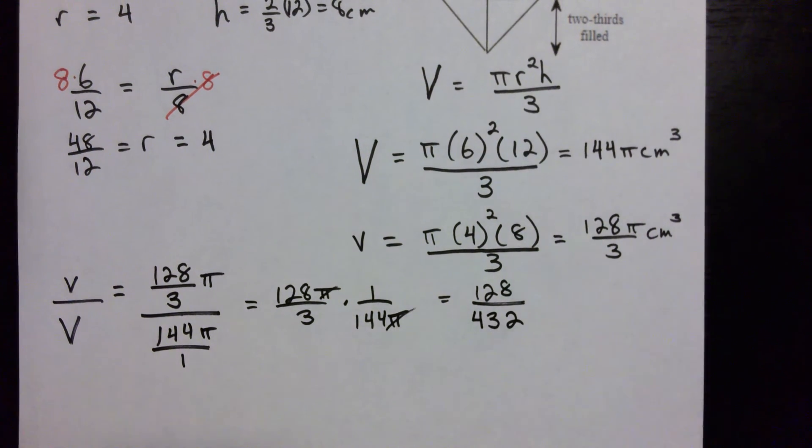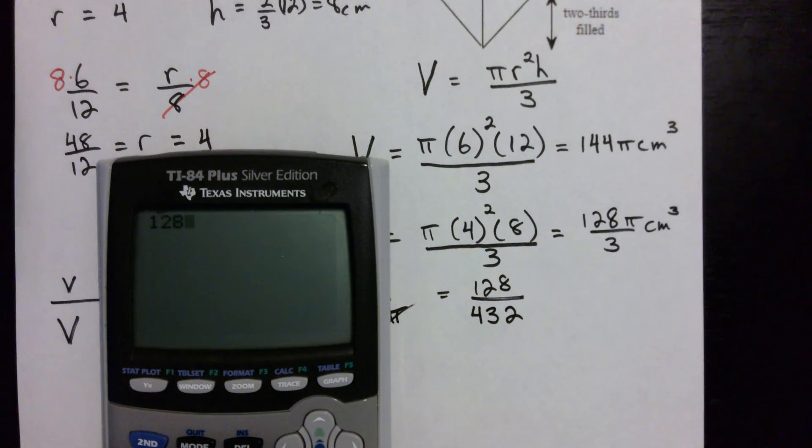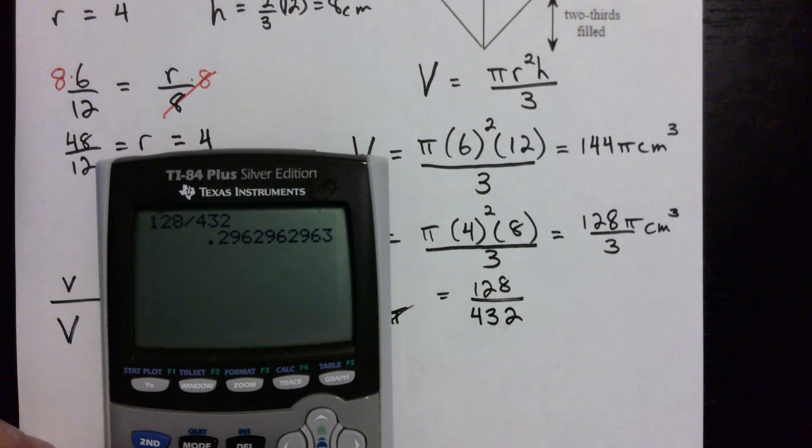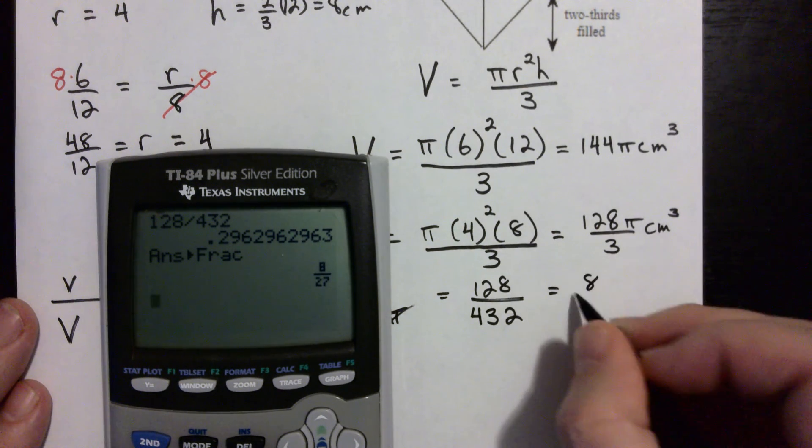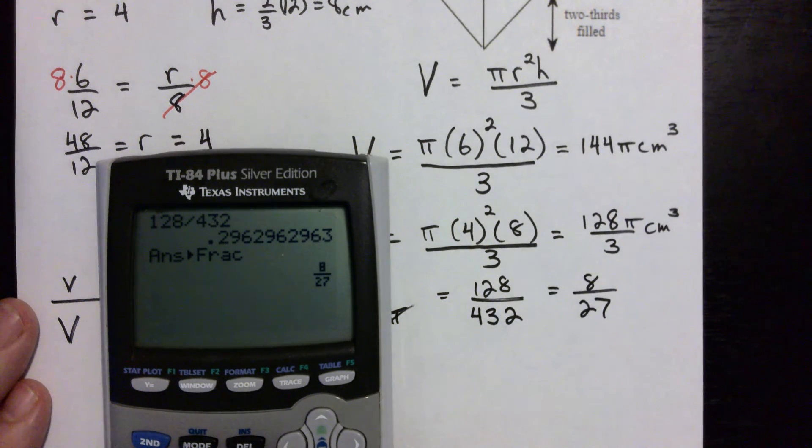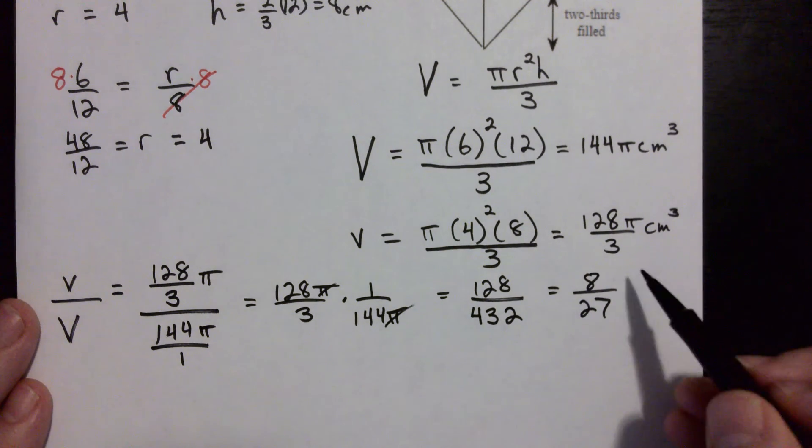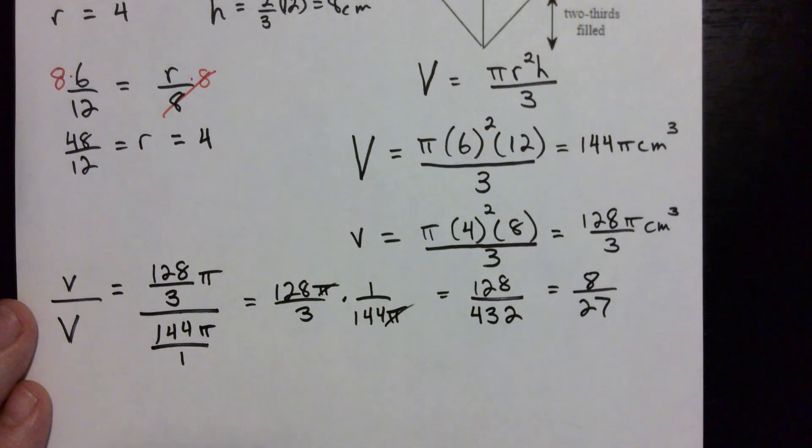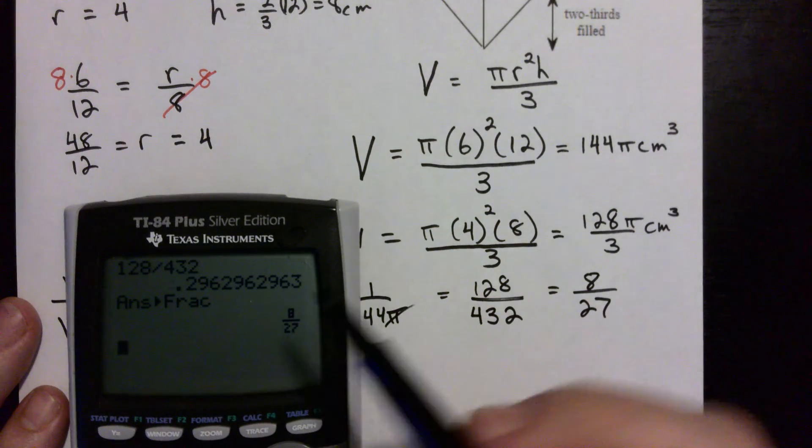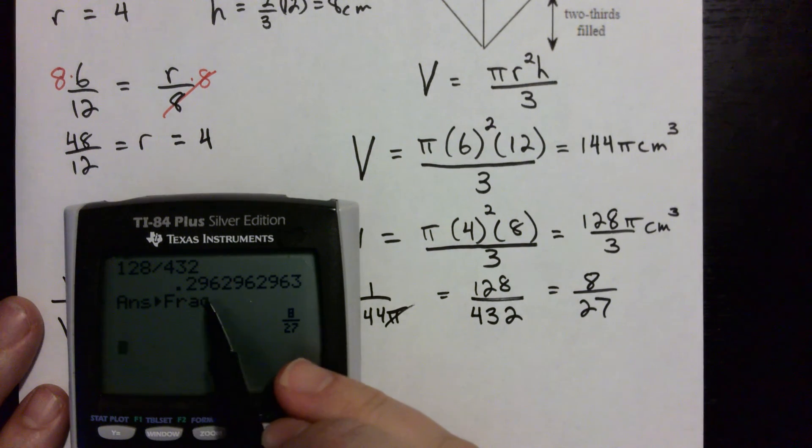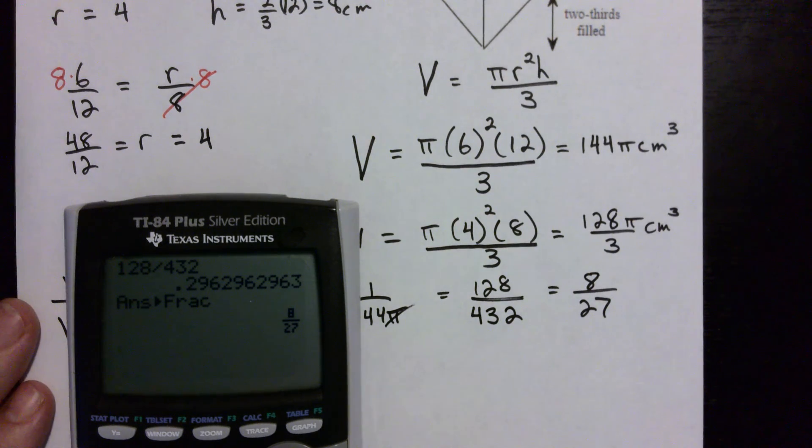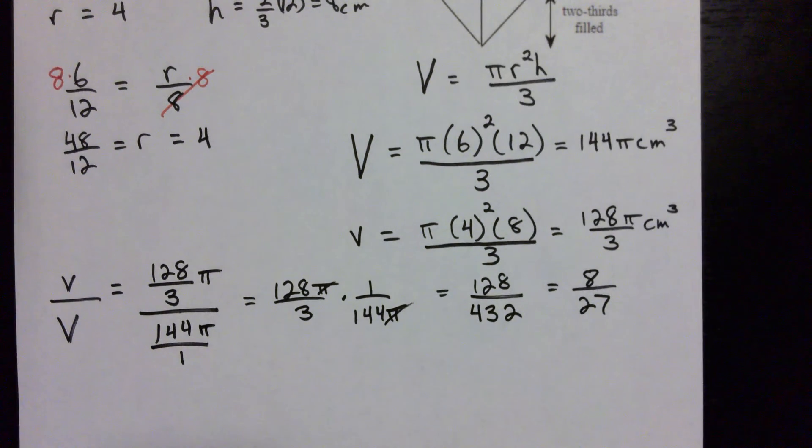Okay, and if we put that into the calculator, 128 divided by 432 and make it a fraction, we get 8 over 27. So the portion of the cup that's filled up with water is 8/27, and if you wanted to write that as a percent it would be about 29.63 percent of the cup is filled up with water. And that's it.